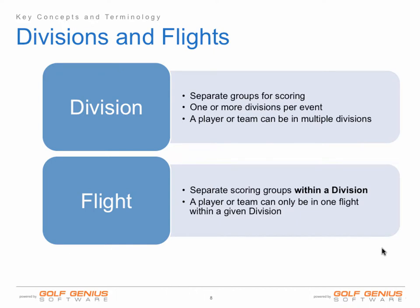Now let's talk about divisions and flights, which are used in our software. Divisions are used to separate groups for scoring. You can create one or more divisions for every event. An important distinction between divisions and flights is a player can be in one or more divisions. Players can only be in one flight. Flights are used to create scoring groups within a division. A player can be within only one flight, unlike divisions.